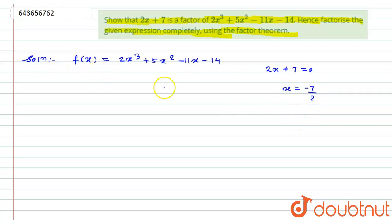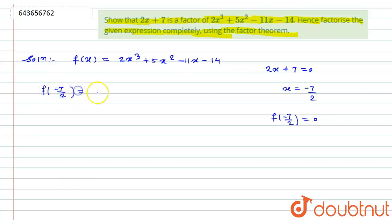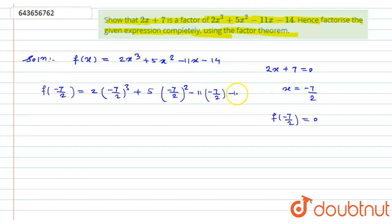If I substitute x = −7/2 into the polynomial, it should satisfy f(−7/2) = 0. So let's evaluate: f(−7/2) = 2·(−7/2)³ + 5·(−7/2)² − 11·(−7/2) − 14.